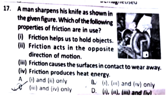Question 17: A man sharpens his knife. Which properties of friction are in use? First: friction helps us hold objects. Second: friction acts in the opposite direction of motion. Third: friction causes surfaces in contact to wear away. Fourth: friction produces heat energy. All four properties apply during knife sharpening, so the right answer is Option D.